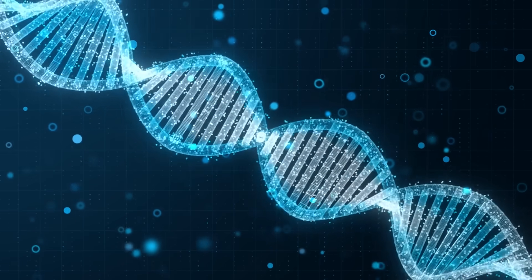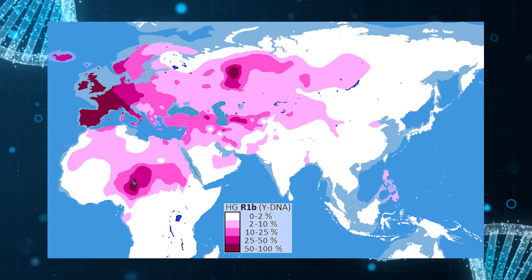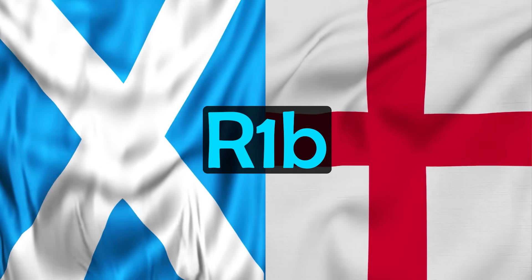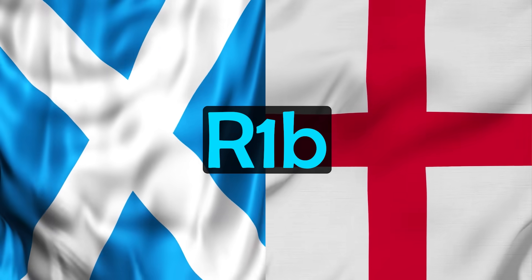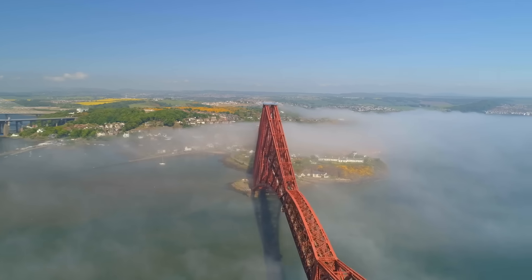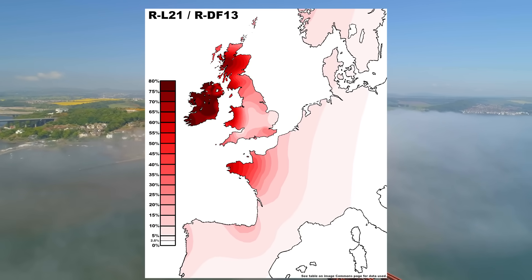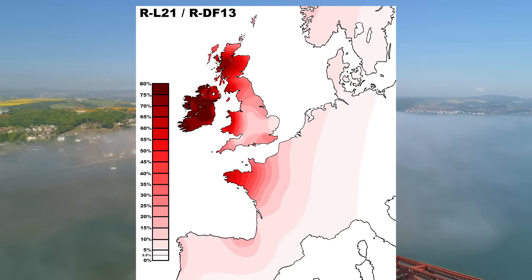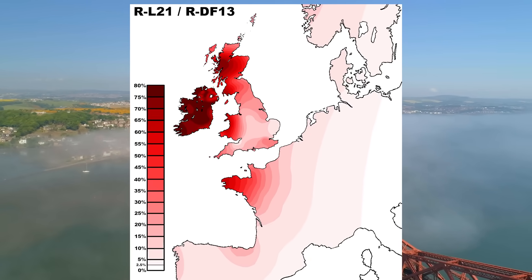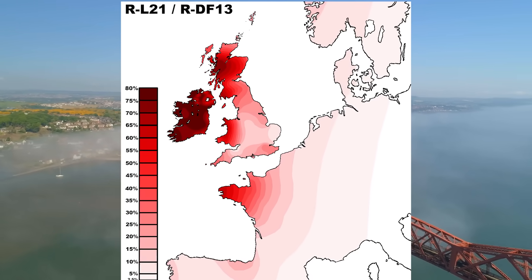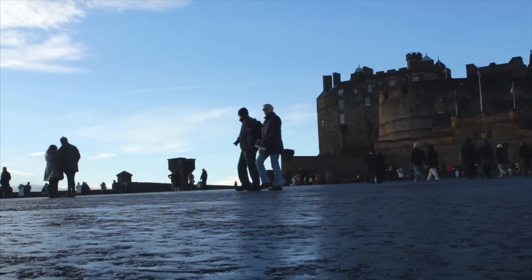We also see this overarching difference when we look at the Y-DNA haplogroups of the two countries. Haplogroup R1b is the dominant Y-DNA lineage in both Scotland and England, reflecting their common Western European heritage. However, the subtypes of R1b most prevalent in each population differ and speak to the different historical episodes that affected them. Scotland is dominated by R1b-L21, often called the Celtic branch of R1b, as it is found in high frequencies in populations with a historic Celtic identity in the Atlantic fringe of Europe. R1b-L21 is found in around 75–80% of men in Scotland, making it the most common haplogroup by far.